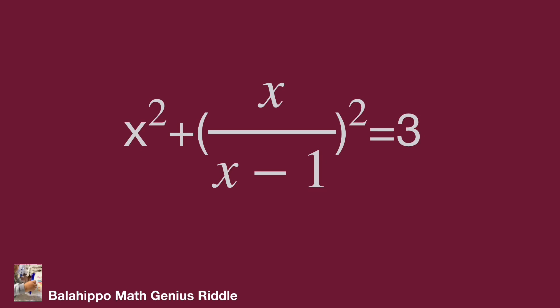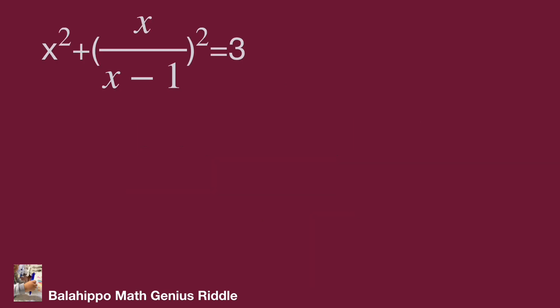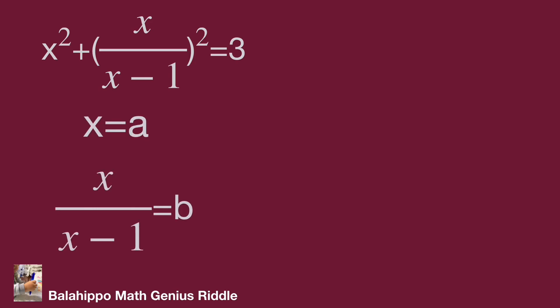Look at the two terms on the left side of the equation that are squared. Can we find a relationship between the fraction x over (x minus one) and x? If yes, then this is a new approach. So I define x equal to a and x over (x minus one) equal to b. Let's try to find the relationship between a and b.